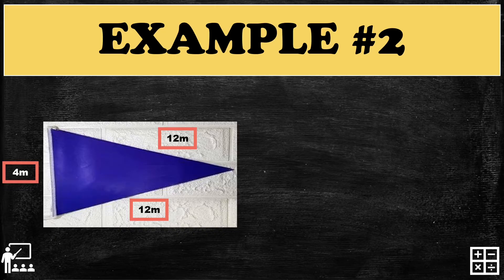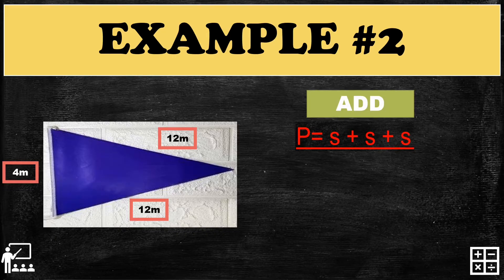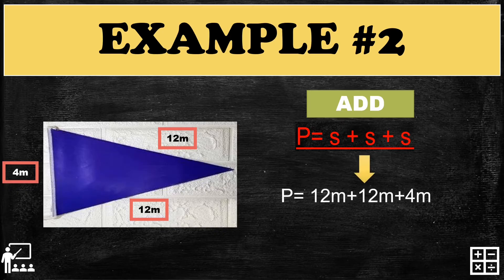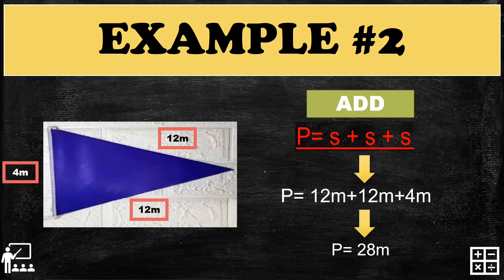We all know that an isosceles triangle has two equal sides. To get the perimeter, we use the formula P equals S plus S plus S. Substituting: 12 meters plus 12 meters plus 4 meters gives you 28 meters. So the perimeter of this banderitas or isosceles triangle is 28 meters.